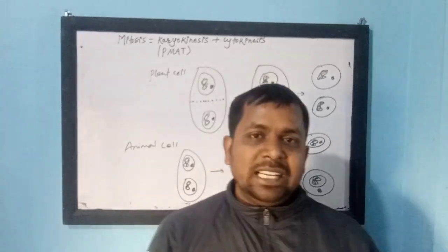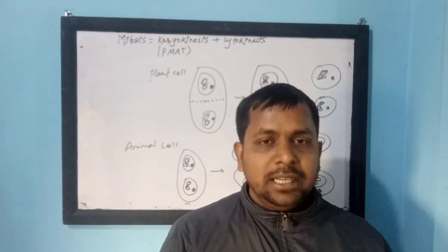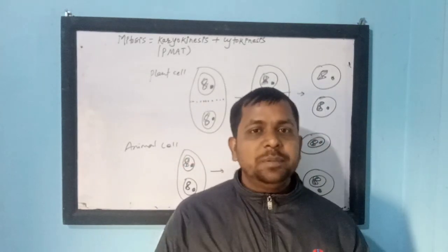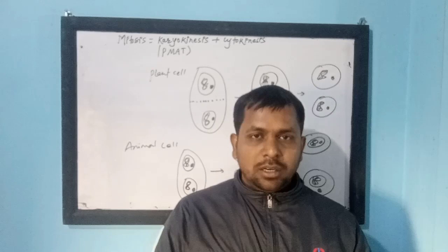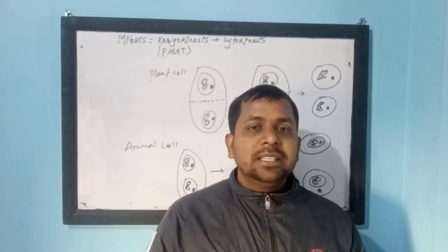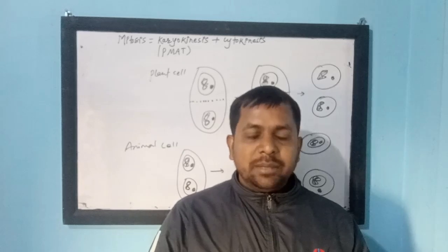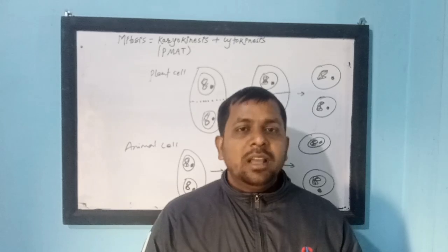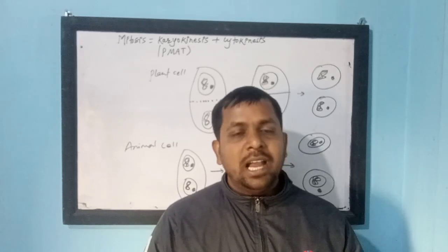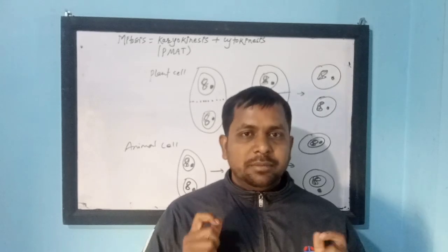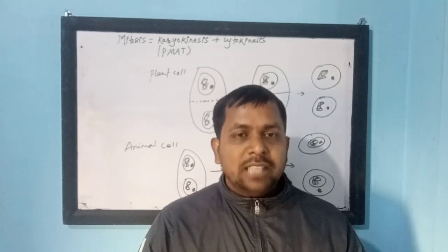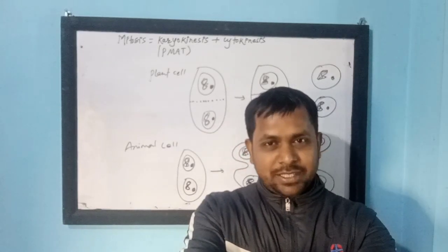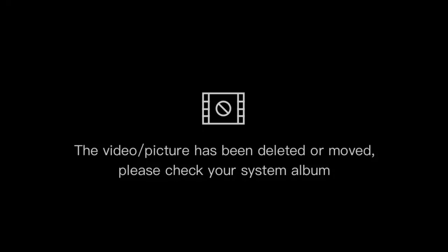After cytokinesis, from one cell two cells are formed — this is how complete mitosis cell division occurs in plant and animal cells. Mitosis has important functions: it helps in growth and development of the organism, and it helps in repairing old or damaged tissue. If you have any questions, please comment, and please subscribe, like, and share the video.